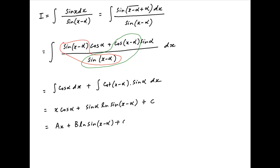This can also be expressed as Ax plus B times ln of sine of x minus alpha plus the constant of integration where A is equal to cos alpha and B is equal to sine alpha.